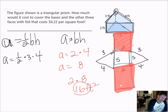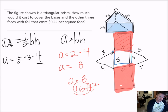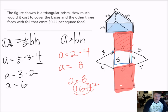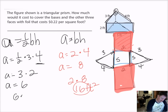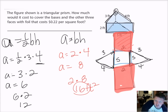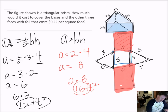Now back to the triangles — I have two of those as well. One-half times three times four: rather than take half of three, I take half of four, which is two. Three times two is six. So the area of one triangle is 6 square feet. I have two triangles, so I multiply six times two and get 12. The area of both triangles is 12 square feet.